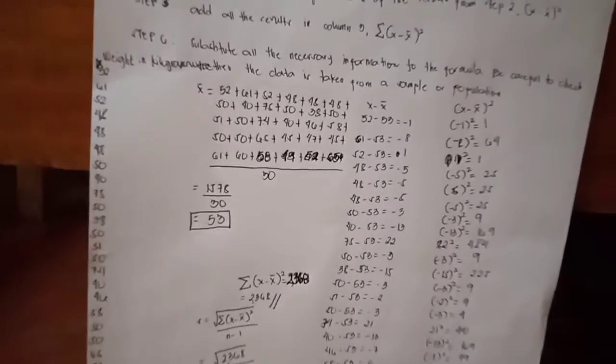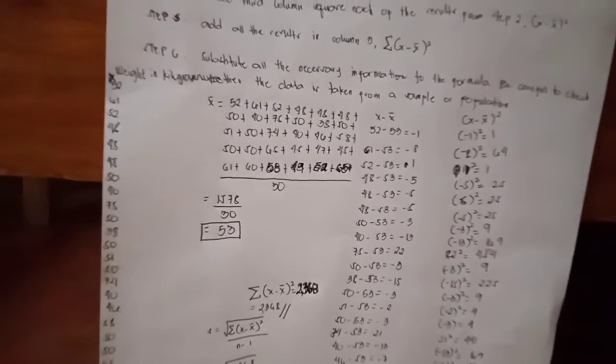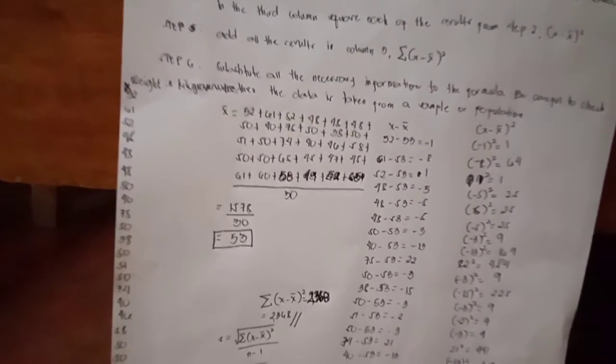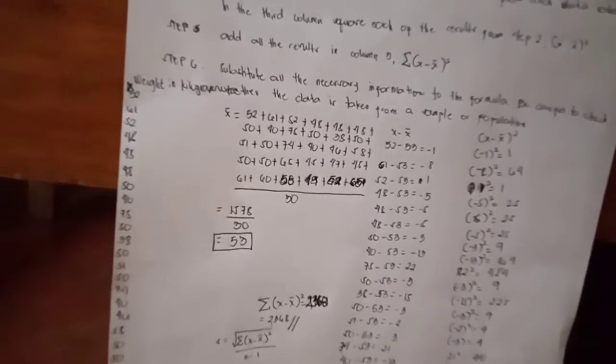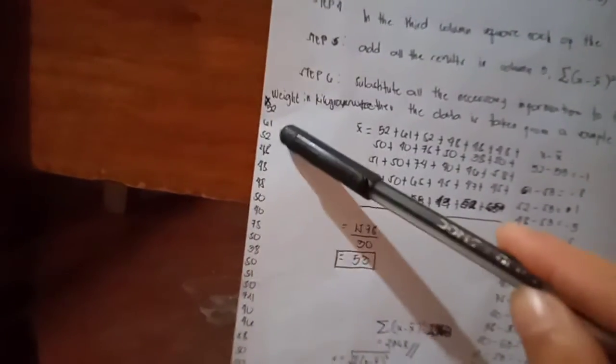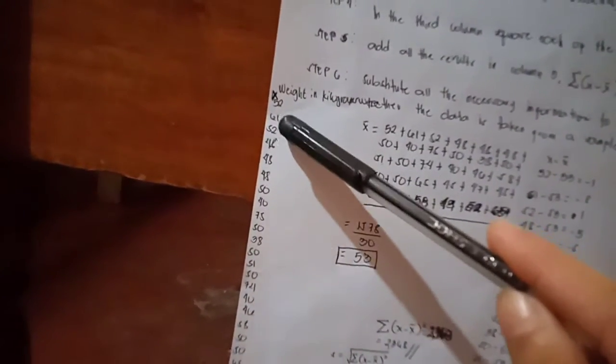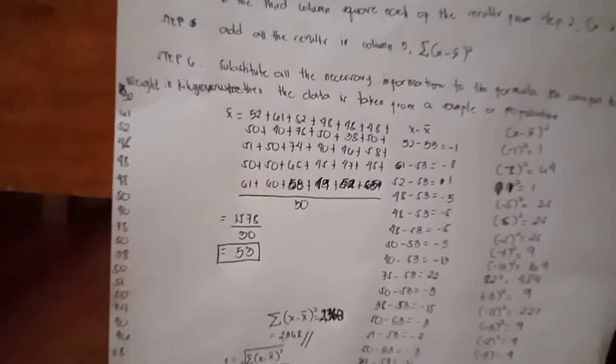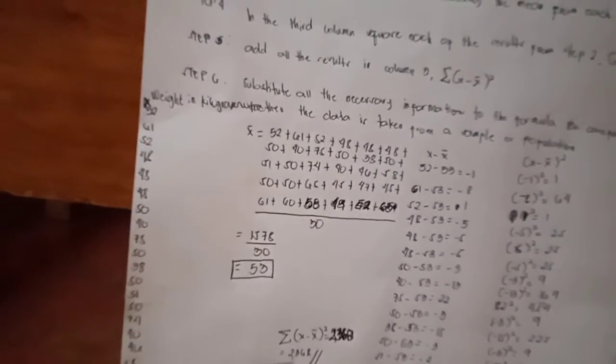So, to find the mean, we have to add the different data values here. Our data values here is this. To get the mean, let's simply add the different data values.